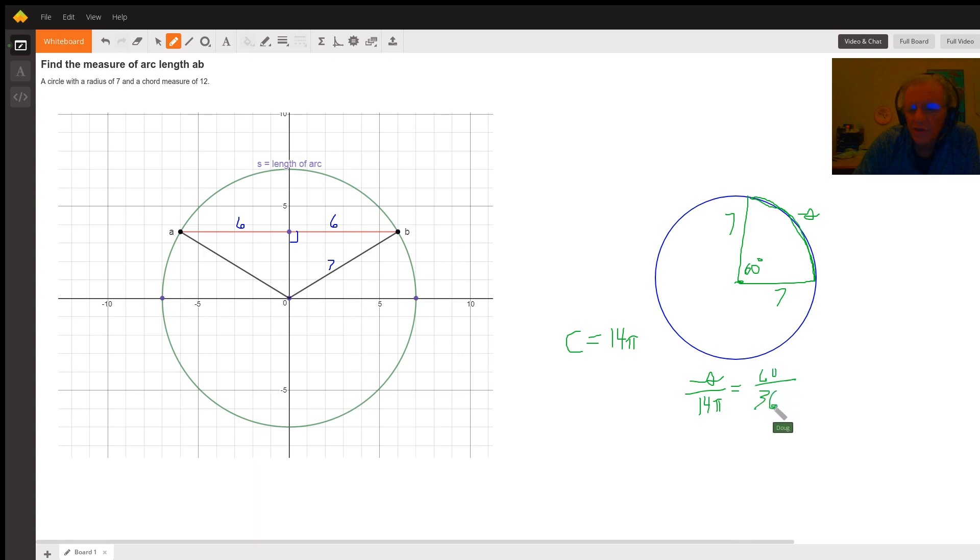Of course, 60 over 360 reduces to 1/6. So S equals 14 pi times 1/6. Of course, you can reduce that to 7 pi over 3.